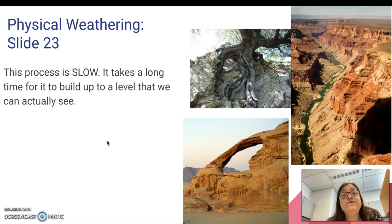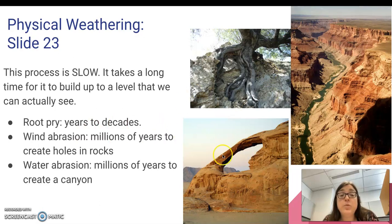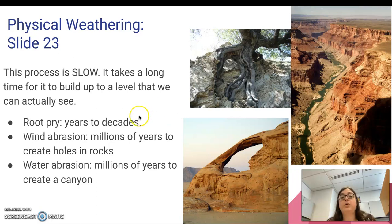This process is very slow. It takes a long time for it to build up to a level that we can actually see. Root pry can take years to decades, but something like wind abrasion or water abrasion can take millions of years to create holes in rocks, to create interesting rock features, to create a canyon. You can compare that to something like a volcanic eruption or a landslide, which can affect land in minutes. So geologically, these are very slow processes.